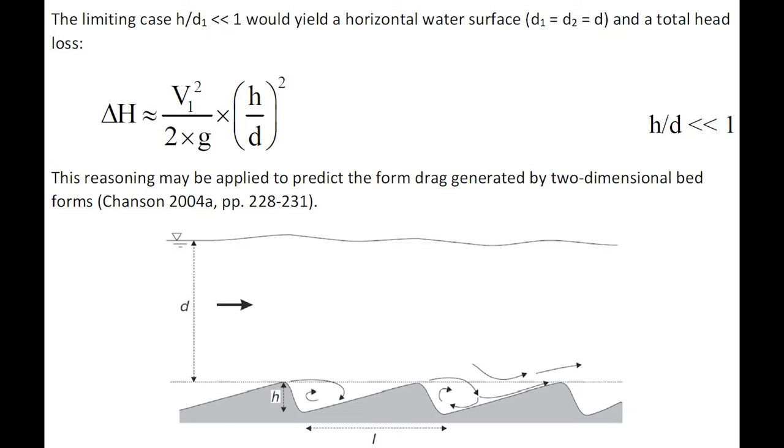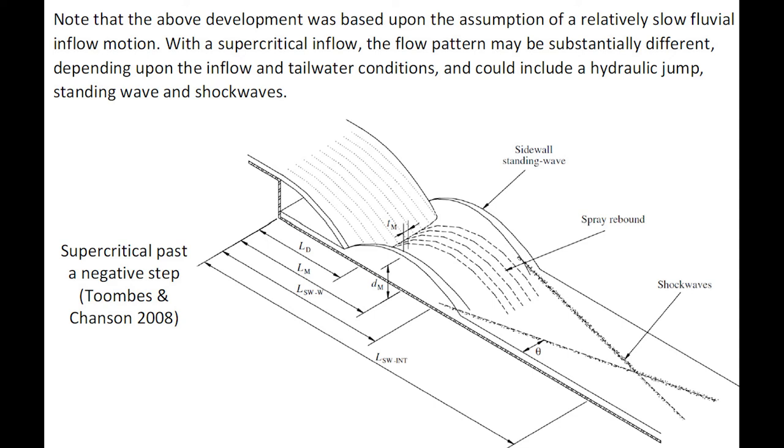At the limit when the ratio of h over d1, with h as step height, is very small, the total head may be simplified in an expression which may be used, for example, to predict the form drag generated by two-dimensional bed forms.